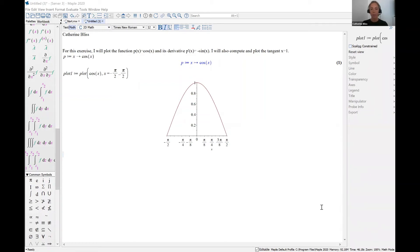In this video, I'm going to explore derivatives in Maple, and I will also show how to plot two functions on the same set of axes, and lastly, we will compute the tangent line and show how to plot that. The function that I'm working with in this file is p of x equals cosine of x. I've already defined this function in Maple, and I've created a plot.